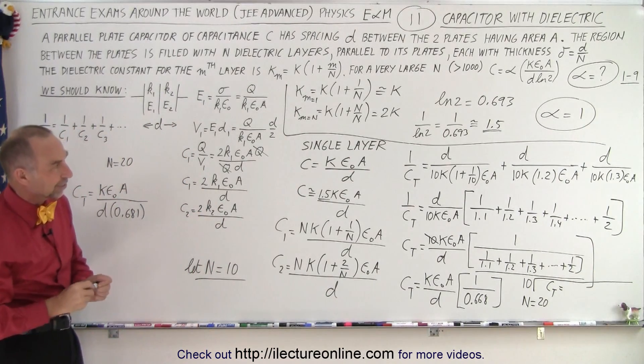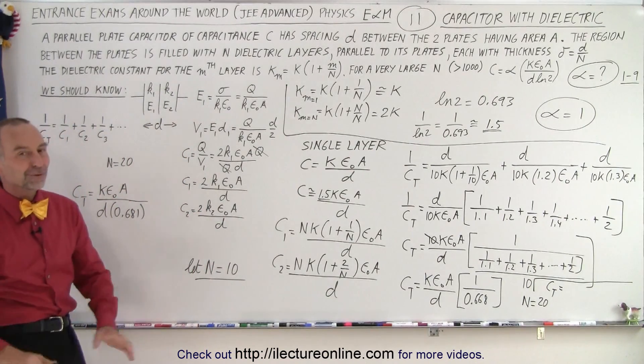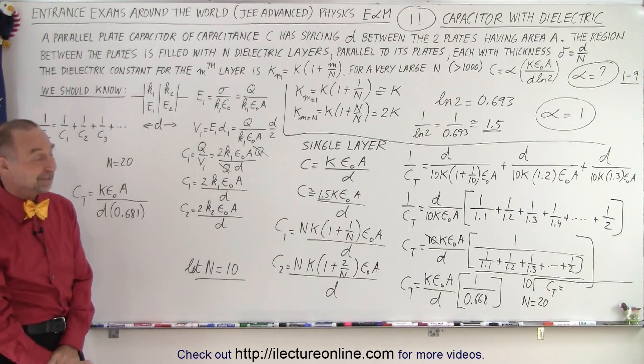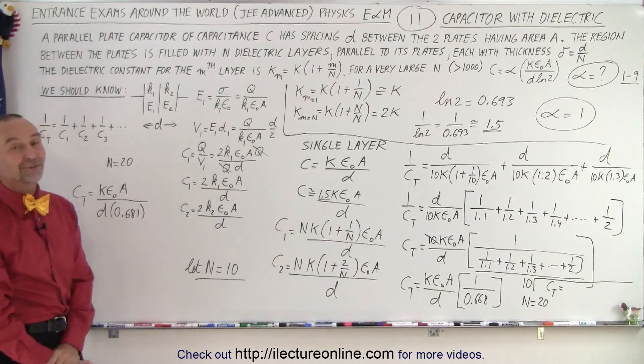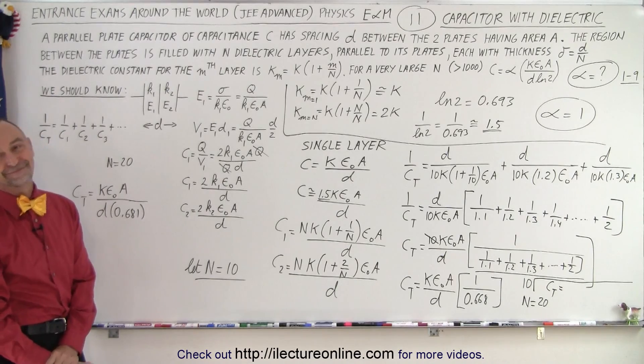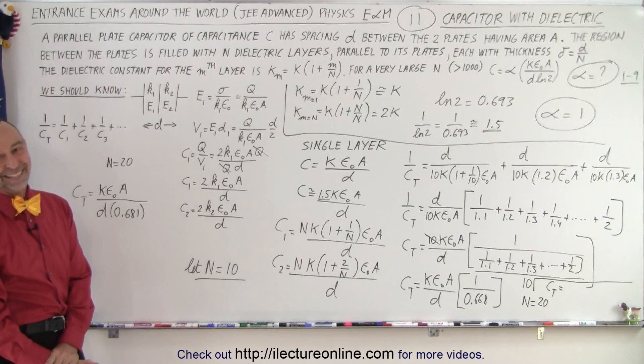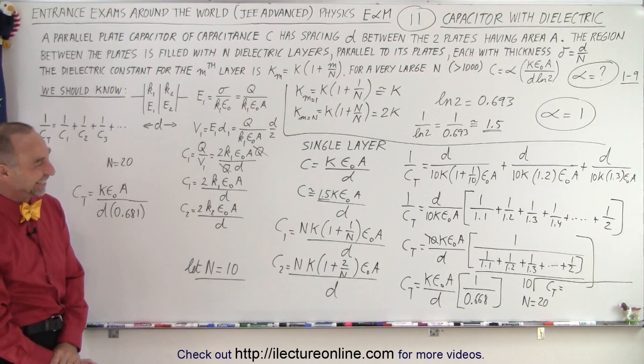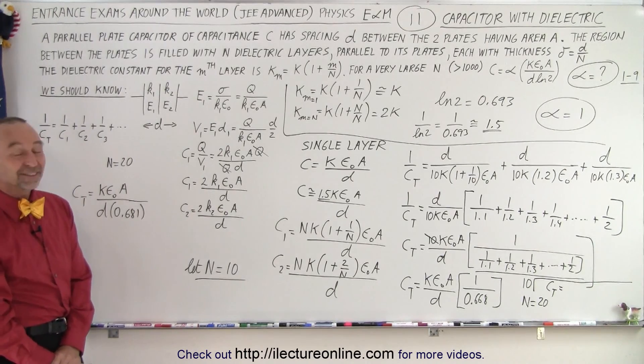So it's a really interesting problem once you dissect it. For exam purposes you can very quickly determine alpha equals 1 as the correct answer and move on. And that is how it's done.